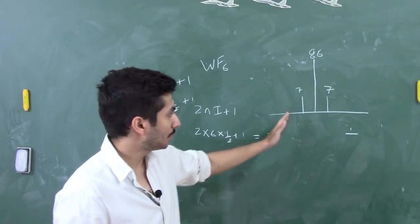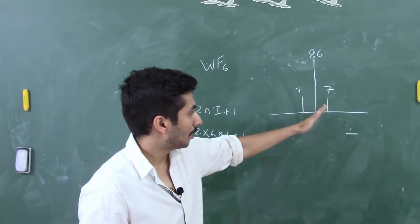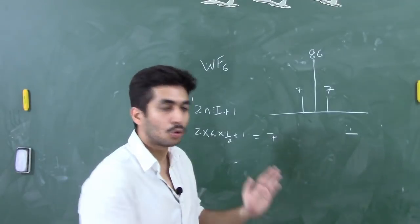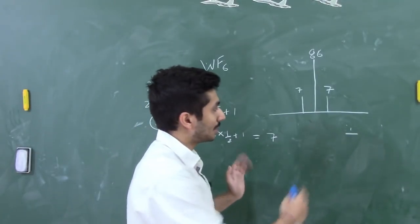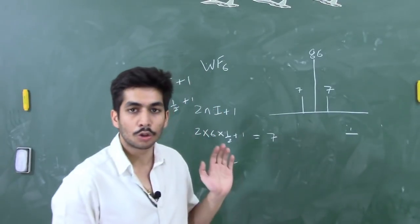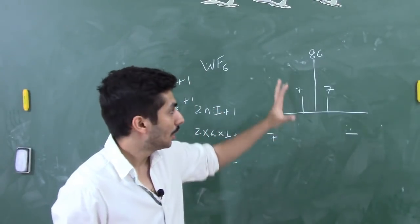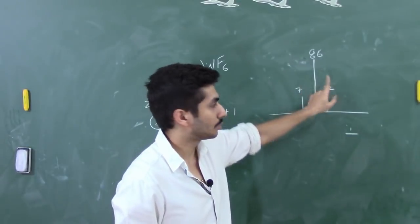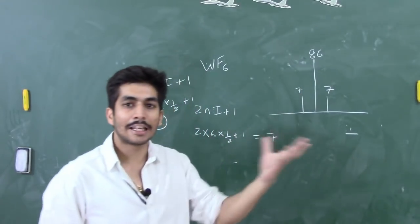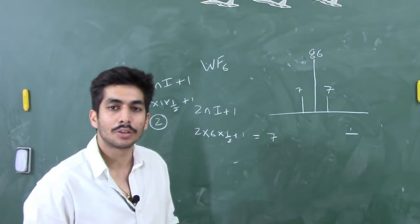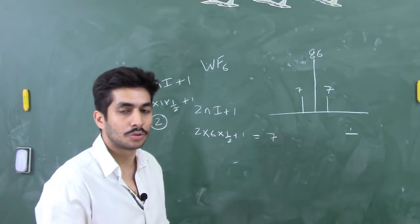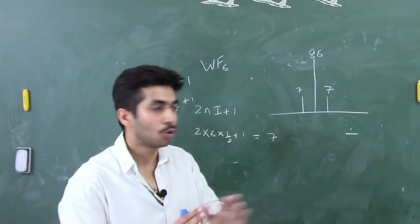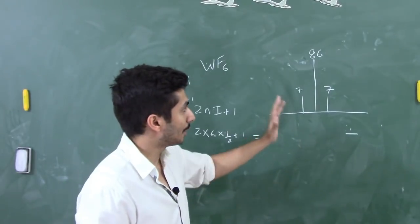The total NMR spectrum appears as a triplet with the ratio 7:86:7, where the outer two lines are the satellite peaks. The ratio depends on the abundance of that particular isotope.